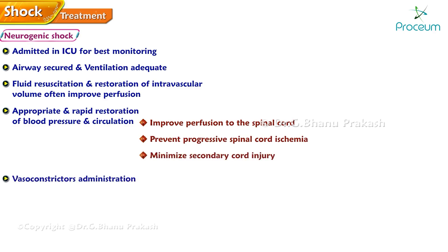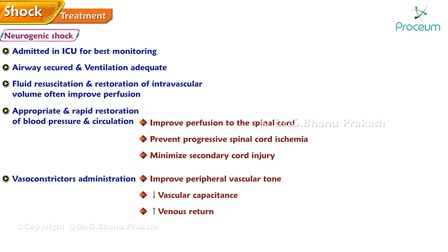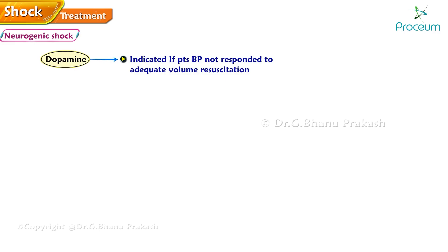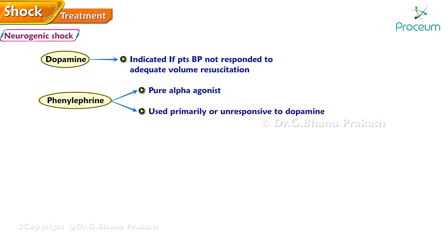Administration of vascular constrictors will improve peripheral vascular tone, decrease vascular capacitance, and increase venous return, but is considered only after hypovolemia is excluded. Dopamine may be used first if blood pressure has not responded to adequate volume resuscitation. A pure alpha agonist, phenylephrine, may be used primarily or in patients unresponsive to dopamine.